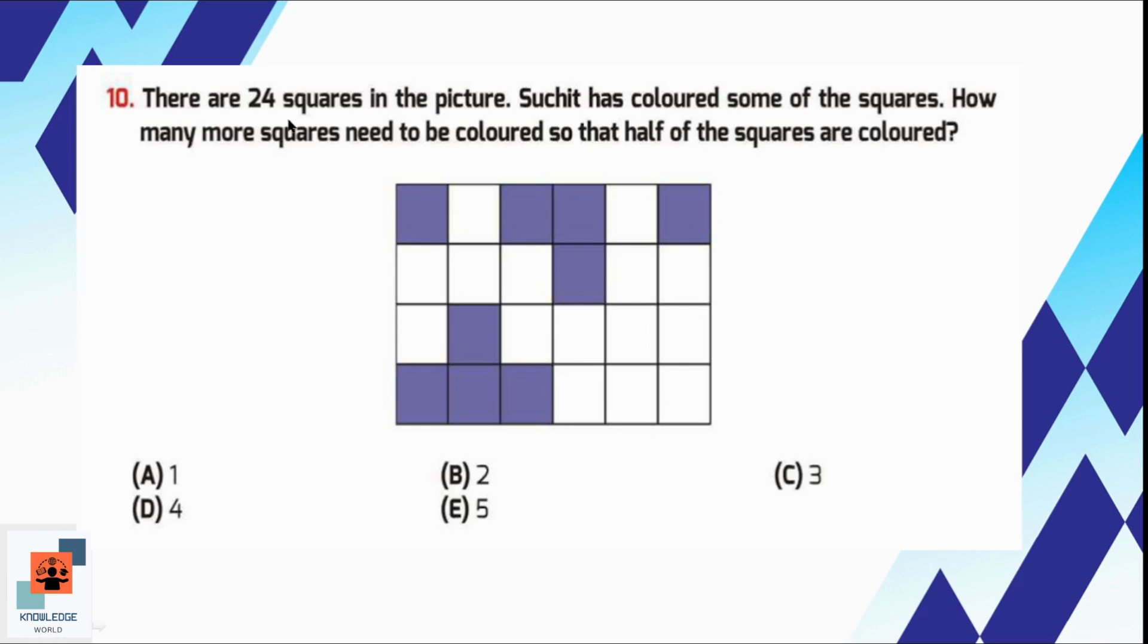Question number 10, there are 24 squares in the picture. Suchith has coloured some of the squares. How many more squares need to be coloured so that half of the squares are coloured? Let's calculate the total number of squares first.